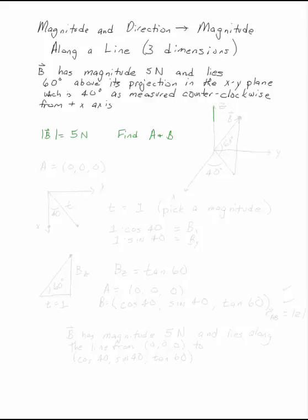So if we look at this in three dimensions, where this is the x, the y, and the z-axis, B has a projection in the plane, 40 degrees as measured counterclockwise from the positive x-axis, and it lies above this projection by 60 degrees.